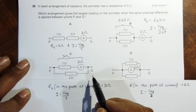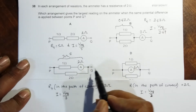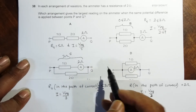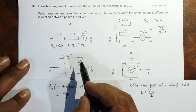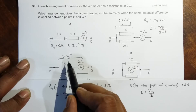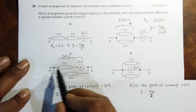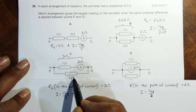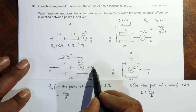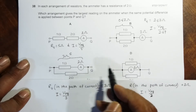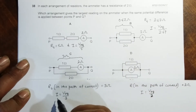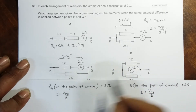Cases C and D are different because the ammeter is placed somewhere within the parallel arrangement. In case C, the resistance along that part is 1 ohm and 2 ohm, which is 3 ohms. Since the other 2 ohm branch does not count, the current through the ammeter should be equal to VPQ divided by 3 ohms.